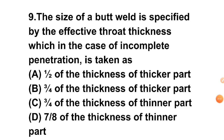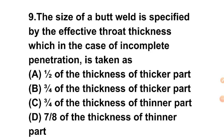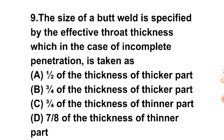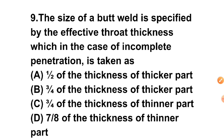Question 9: The size of butt weld is specified by the effective throat thickness, which in the case of incomplete penetration is taken as — A) 1/2 of thickness of thicker plate, B) 3/4 of thickness of thicker plate, C) 3/4 of thickness of thinner plate, D) 7/8 of thickness of thinner plate. In incomplete penetration, it is taken as 7/8 of the thickness of the thinner plate. The answer is D.